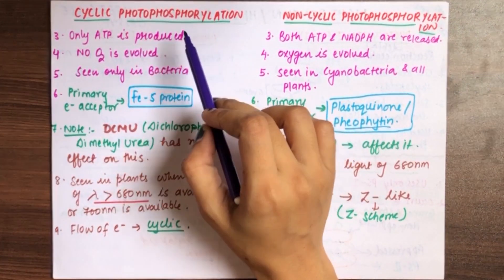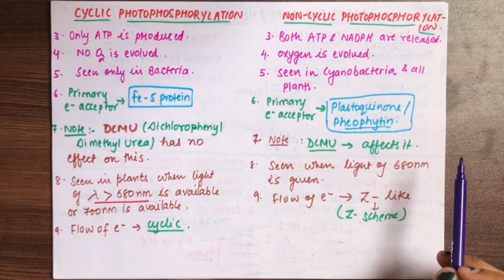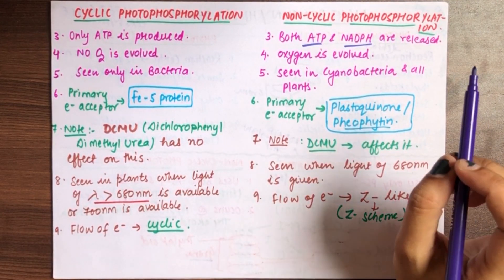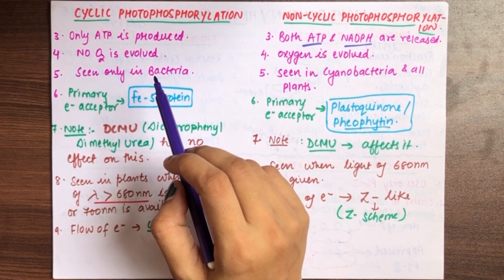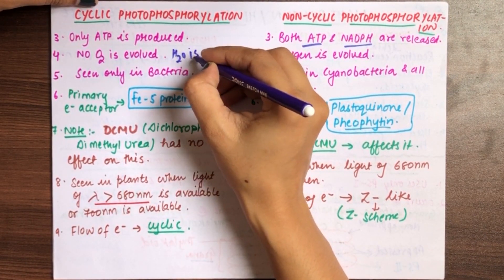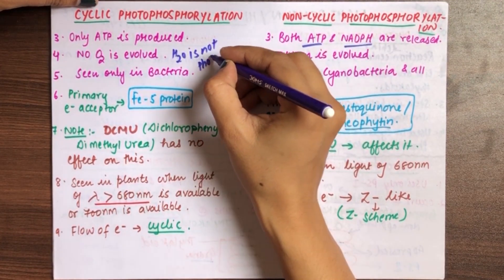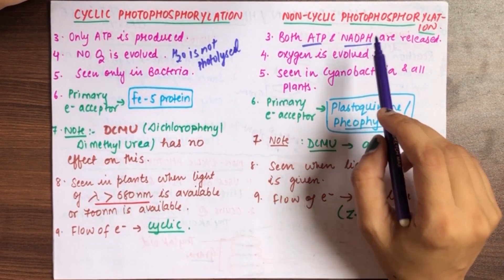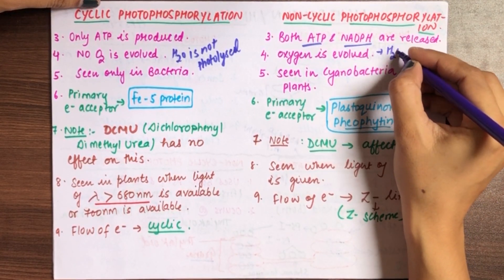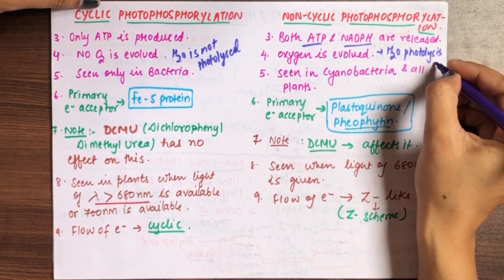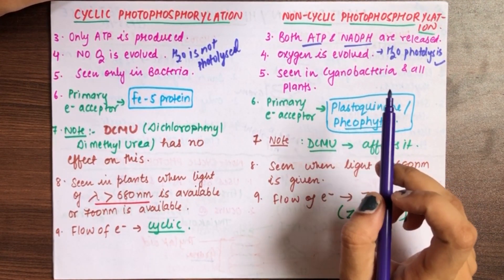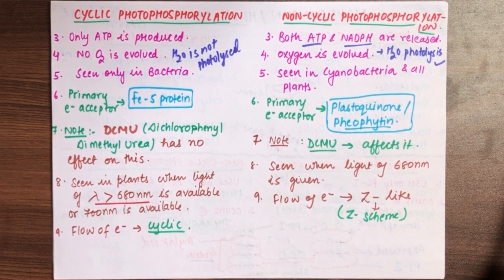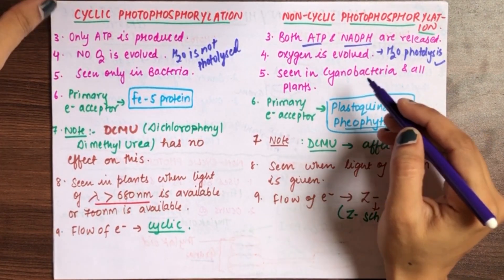Let's see next. In cyclic photophosphorylation, only ATP is produced. In non-cyclic, both ATP and NADPH are made. Next, in cyclic photophosphorylation, O2 is not evolved because here water is not photolysed. In non-cyclic, there is photolysis of water, so oxygen will evolve. Cyclic is seen only in bacteria, rarely in plants, while non-cyclic occurs in cyanobacteria and all plants.